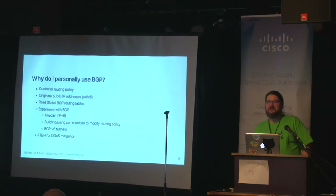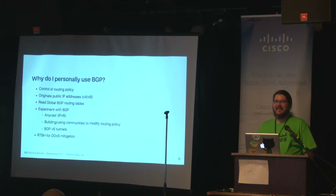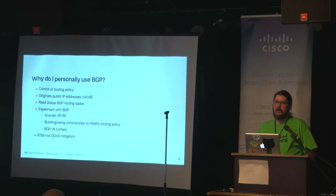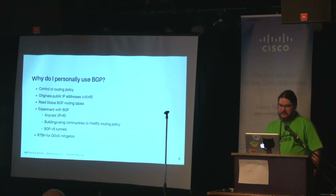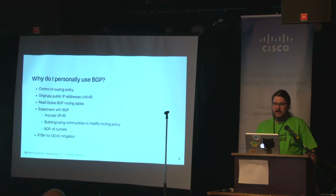Why do I personally use BGP? Control of my routing policy is a big one. I originate public IP addresses — I have a /24 of IPv4 space, which I applied for on the day that ARIN announced their waiting list. I also have a /48 of IPv6 space — approximately 256 sites worth of IPv6 space. I also use BGP because I want to read the global BGP routing tables and interact with BGP through software to store routes and look at Manitoban routing. I'm also experimenting with anycast on both IPv6 and IPv4 within my own system.